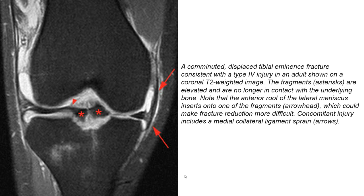This is a comminuted, displaced tibial eminence fracture consistent with a Type 4 injury in an adult, shown on a coronal T2-weighted image. The fragments are elevated and are no longer in contact with the underlying bone. The anterior root of the lateral meniscus inserts onto one of the fragments, which could make fracture reduction more difficult. Associated ligamentous injury includes a medial collateral ligament sprain, indicated by an arrow.